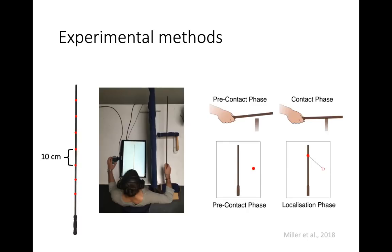Their job was to tell us, after the object hit the tool, where on the surface of the tool they felt the touch happening. In the pre-contact phase, they would sit holding the rod looking at the computer screen. A red cursor on screen could be controlled with a trackball using their left hand. After contact, they would move that cursor onto the drawing and click, telling us their judgment about the location.